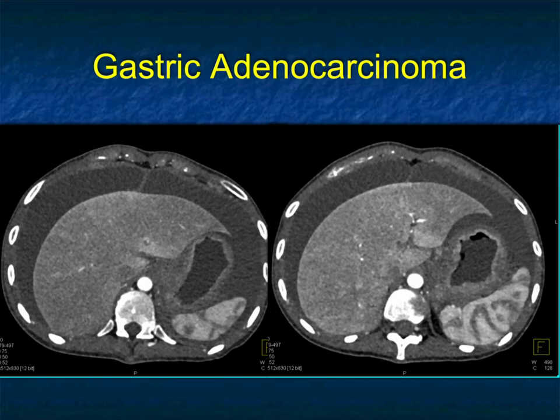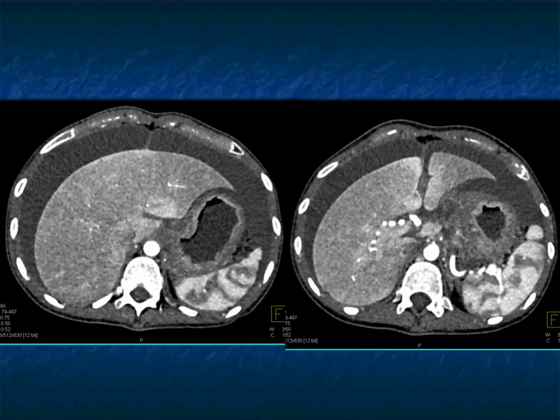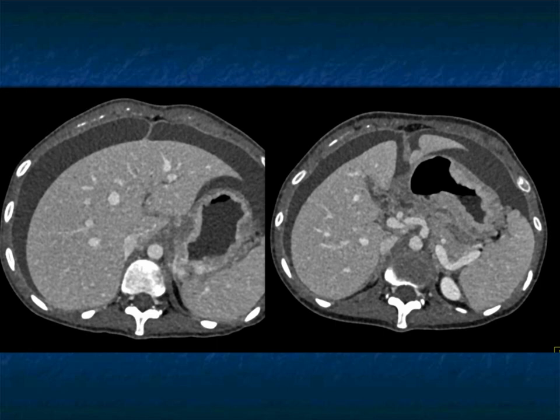Gastric adenocarcinoma can be focal, with ulceration, or diffuse and infiltrating. Key things, of course, are protocols — give the patient oral contrast. We use water if it's a dedicated gastric study, positive contrast if we're looking for a leak. You can see the mucosal enhancement and wall thickening. As you scan down from the fundus to the body, the thickening increases. You can see ascites, perfusion changes in the liver, and adenopathy in the celiac and gastrohepatic chain as well as perigastric regions.